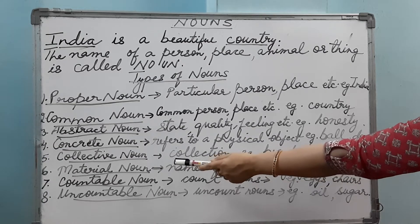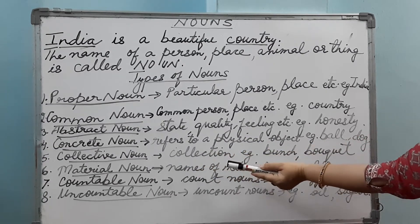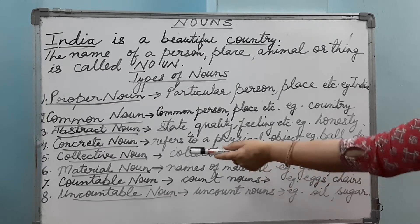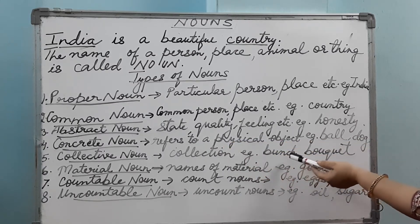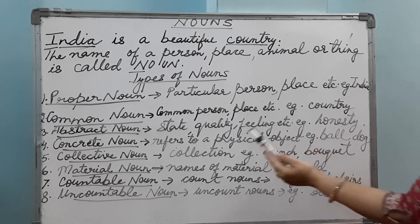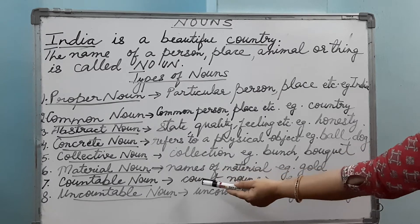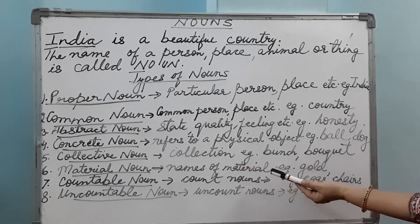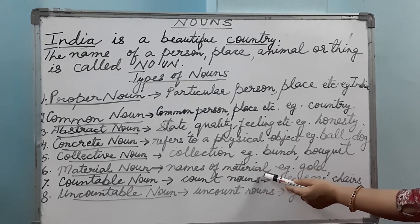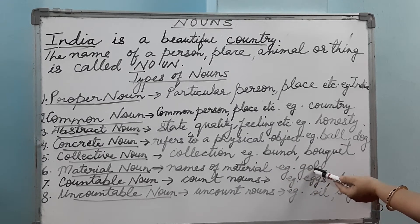Collective noun — as the name suggests, it always tells us about a collection. It is the name of a collection. Examples: bunch, bouquet, pack, etc. Then comes the material noun. Material nouns are the names of materials — it can be the name of a metal or any other thing. Examples: gold, silver, etc.